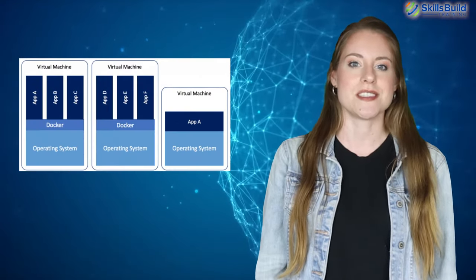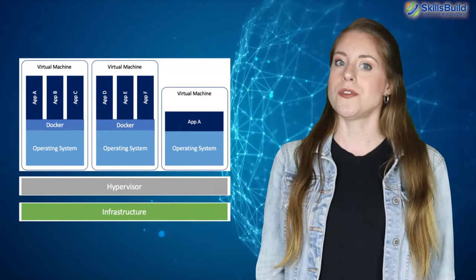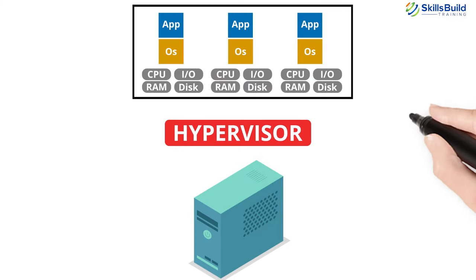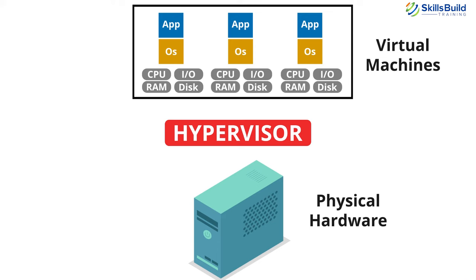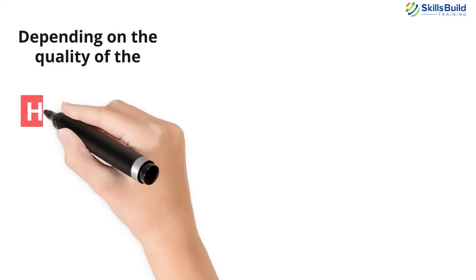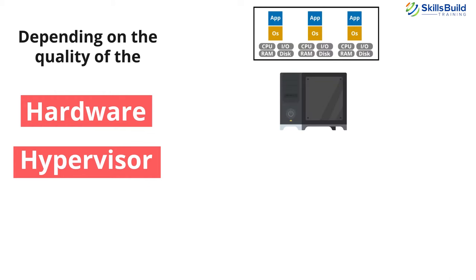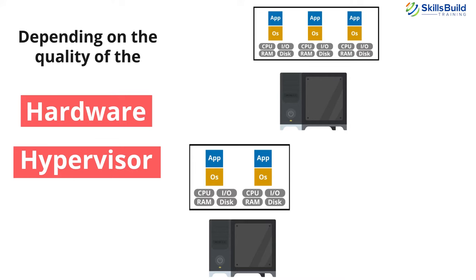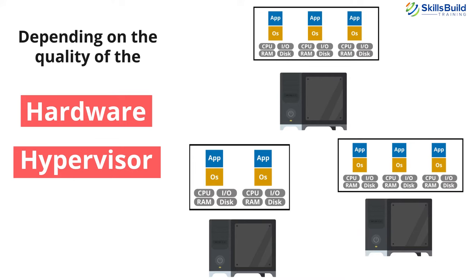For virtual machines to be created and managed, hypervisor software has to be installed and connected to the hardware. Hypervisors play several crucial roles: first, virtualizing hardware resources and components of the host computer so that virtual machines can be supported by the hardware. Second, depending on the quality of the hardware and the hypervisor, there are a limited number of virtual machines that can be created on a host computer — determining and creating that number is also administered by a hypervisor. Third, the hypervisor is responsible for isolating all virtual machines on a single host computer so that any changes to or usage of the virtual machines does not affect each other or the host hardware itself.